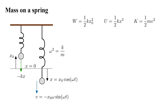Let's define the potential energy u of the mass at an arbitrary position x to be the work required to move the mass to that position from the equilibrium position: u equals one-half kx². And we assume our previous expression for kinetic energy, k equals one-half mv². Let's see if the total energy e equals k plus u is conserved.